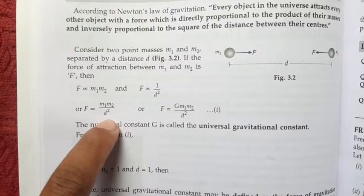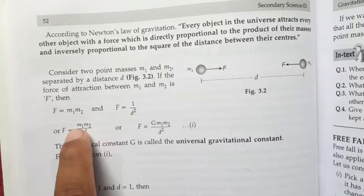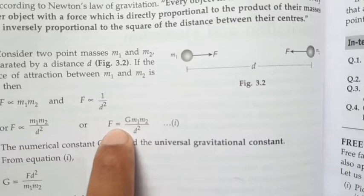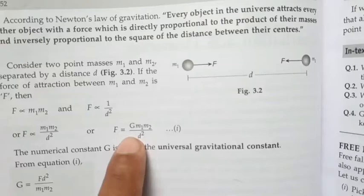To convert proportional to equal, we introduce a constant. The numerical constant G is called the universal gravitational constant.